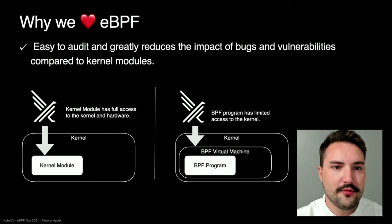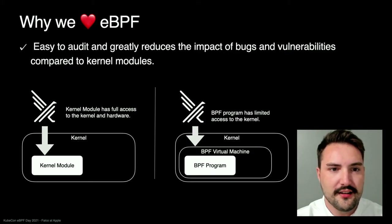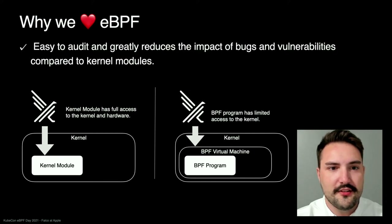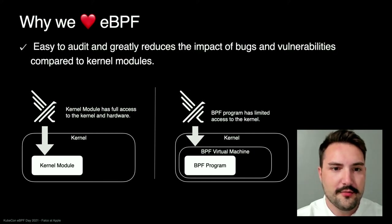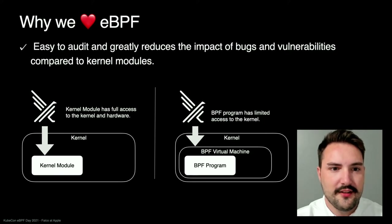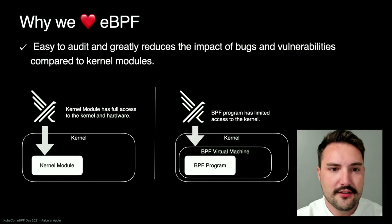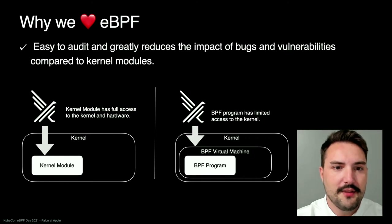For example, the Falco Kernel module may concern itself only with tracing, but has the ability to do anything once loaded into the Kernel. From a security perspective, it does not follow the principle of least privilege. EBPF programs, on the other hand, are limited to a set of curated function calls called EBPF helper functions.